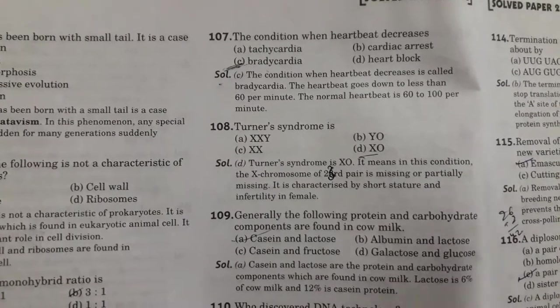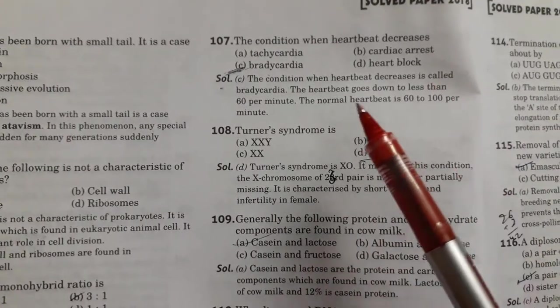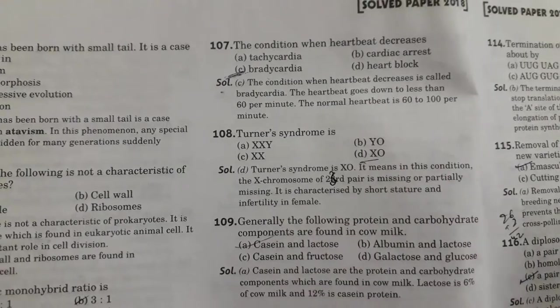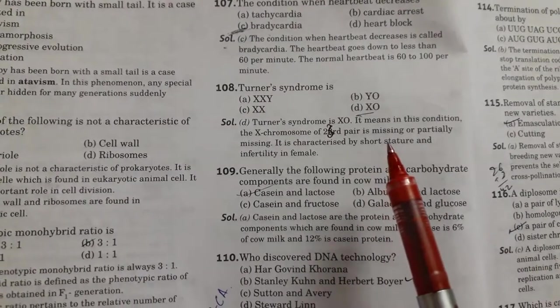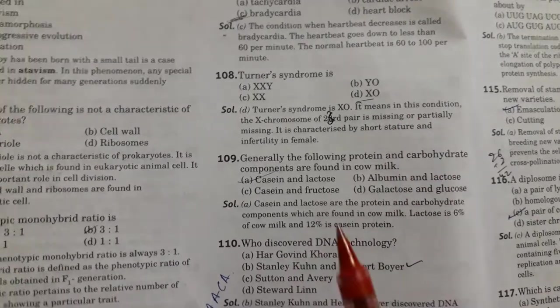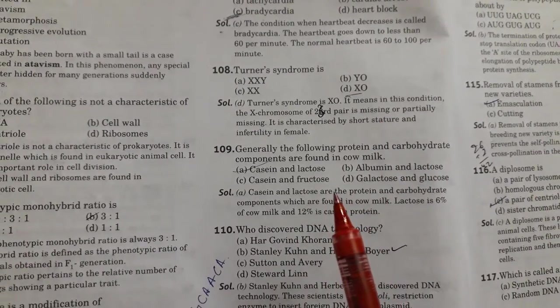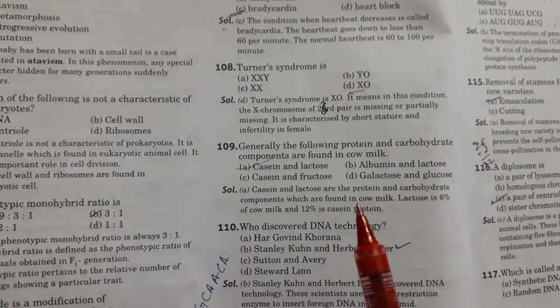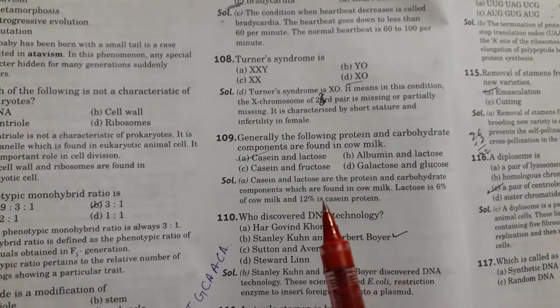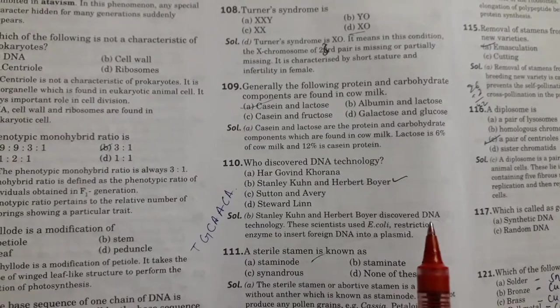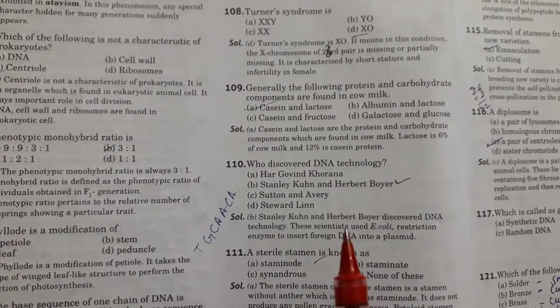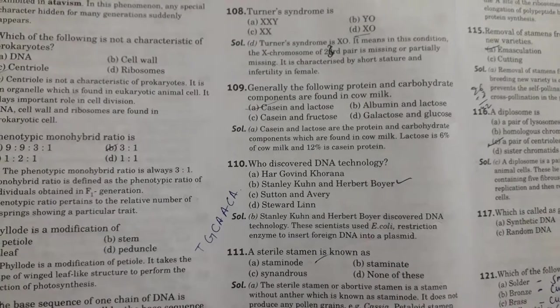Next question is the condition when heart beat decreases. So this is called bradycardia. Option C is right. Then next is Turner syndrome. So this is XO, option D. Then next is generally the following protein and carbohydrate components are found in cow milk. So these are casein and lactose. Next is who discovered DNA technology. This was discovered by Stanley Cohen and Herbert Boyer.